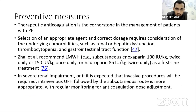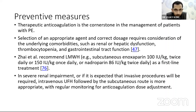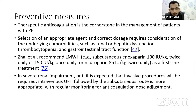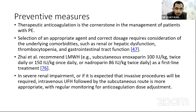Therapeutic anticoagulation is the cornerstone in management of patients with pulmonary embolism. The choice between unfractionated heparin and low molecular weight heparin depends on renal dysfunction, hepatic dysfunction, thrombocytopenia, and GI tract dysfunction — these have been covered by colleagues in earlier talks. In severe renal impairment or when invasive procedures are contemplated, unfractionated heparin is the choice.